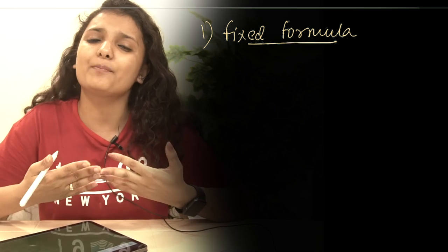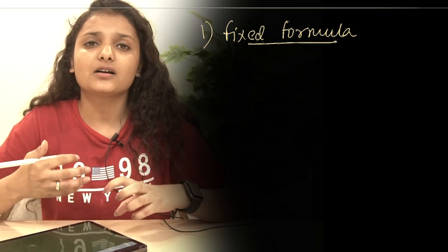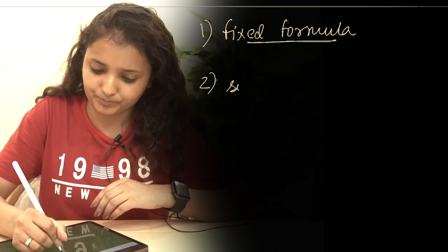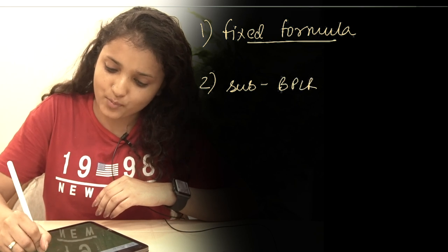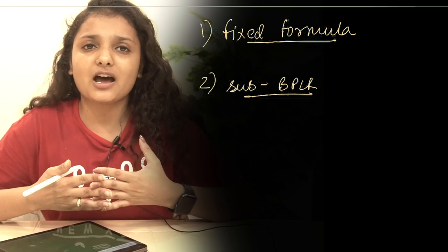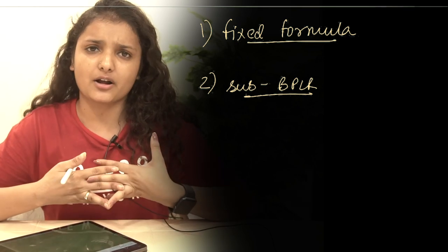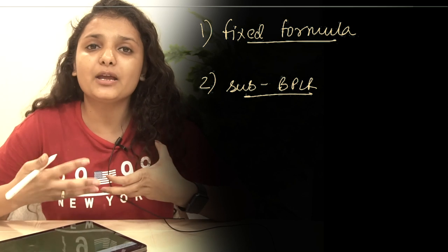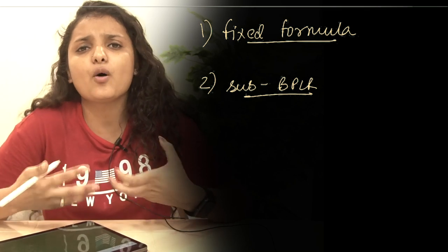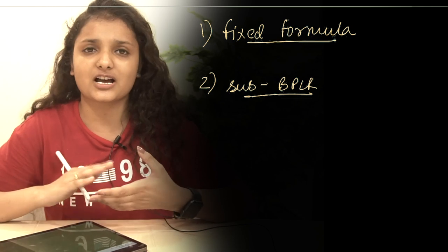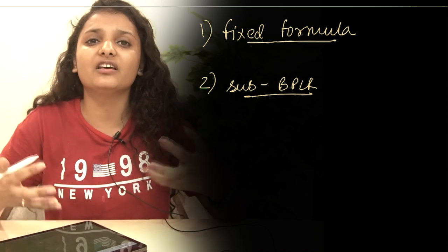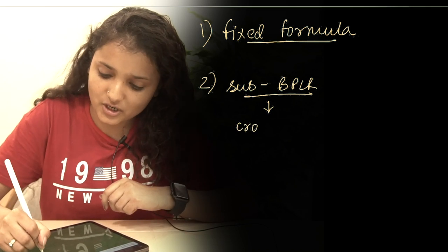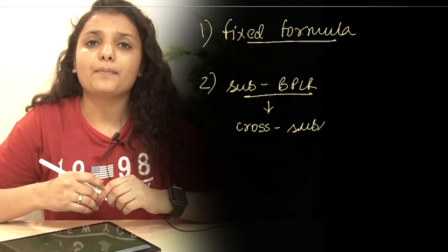As there was no fixed formula, banks charged sub-BPLR rates to their most privileged customers. Sub-BPLR means going below the BPLR — for example, if a bank is charging 8% to its customers, a sub-BPLR rate would mean it is charging say 4% or 5% to its most privileged customers. The privileged customers are those having a great and good relationship with the banks. From this sub-BPLR system comes the concept of cross-subsidization.